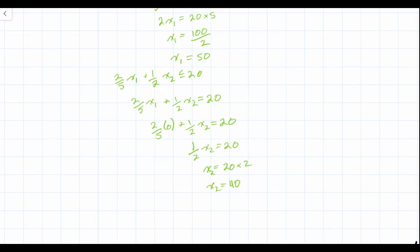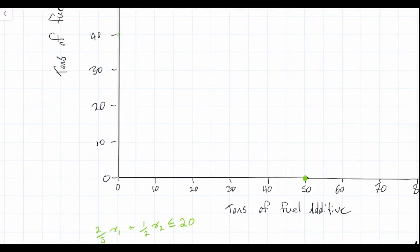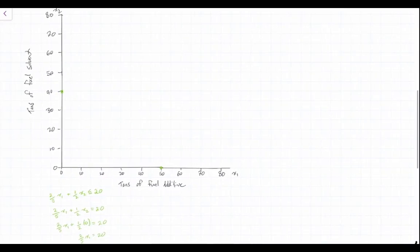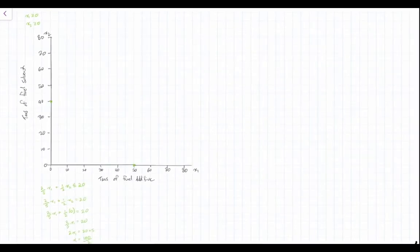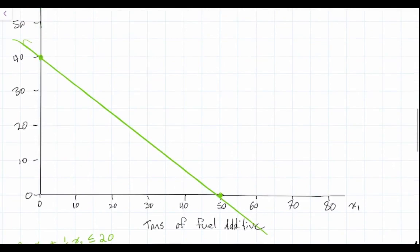We've found our x1 and x2 intercepts: x1 equals 50 and x2 equals 40. Now we draw our line through these two points and label our constraint so we don't get confused. This line represents two-fifths x1 plus one-half x2 less than or equal to 20 — that's our first constraint, otherwise known as material one.